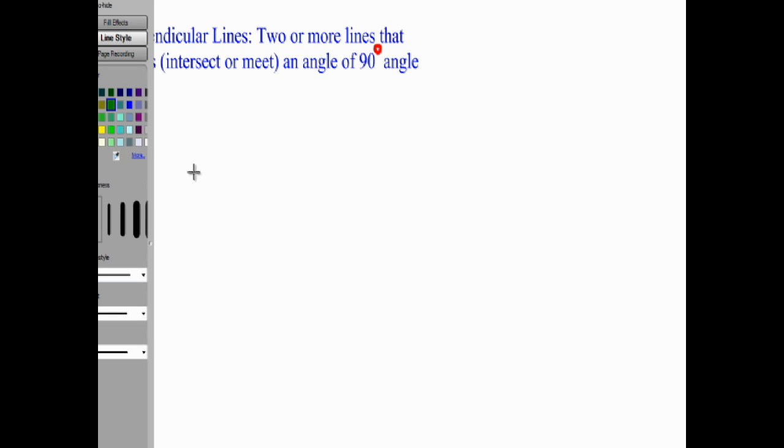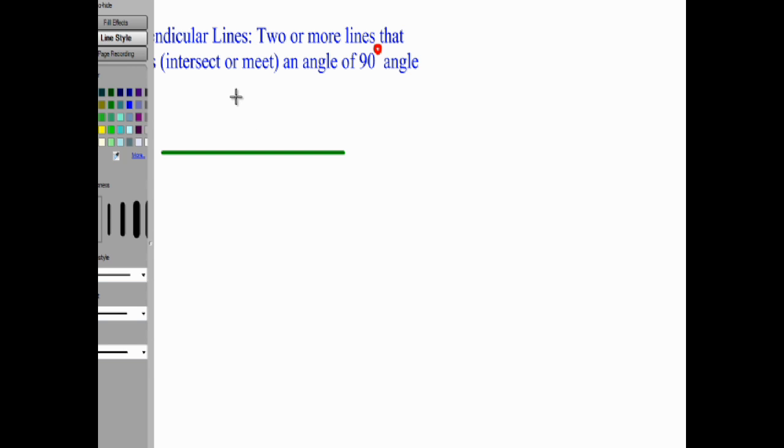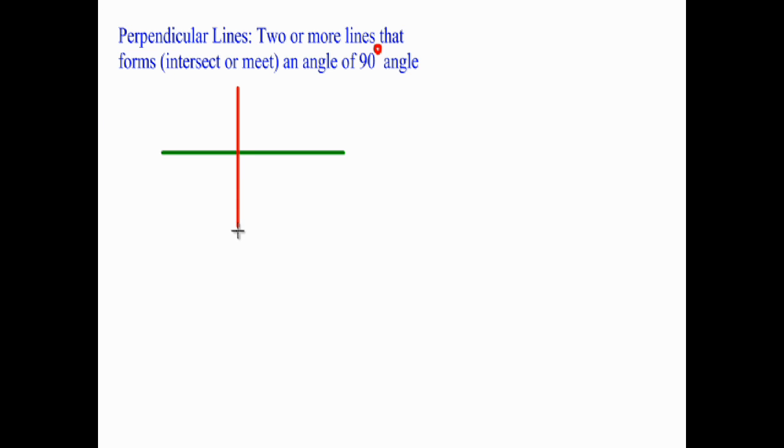I think this is pretty straightforward. So let's say I have a line here. Let me change the color now. Let's say I have a green line, and my green line is a horizontal line. Let's say I have a red line. So this is my red line. Now if you notice what I have here, my red line is a vertical line, meaning that it is running from top to bottom.